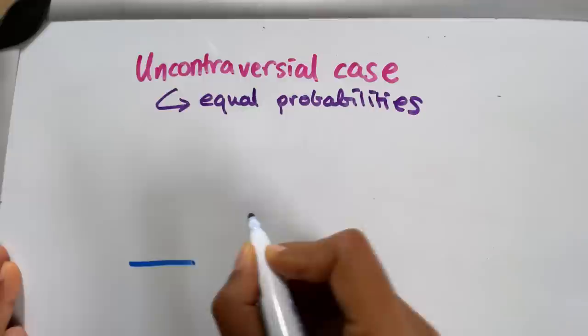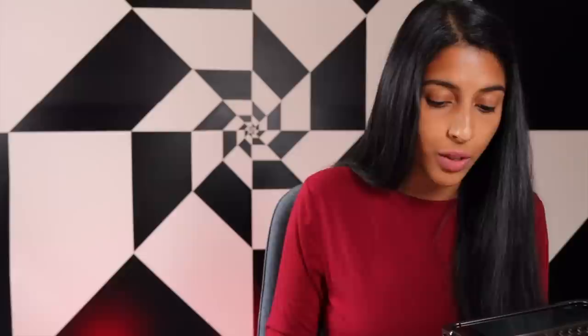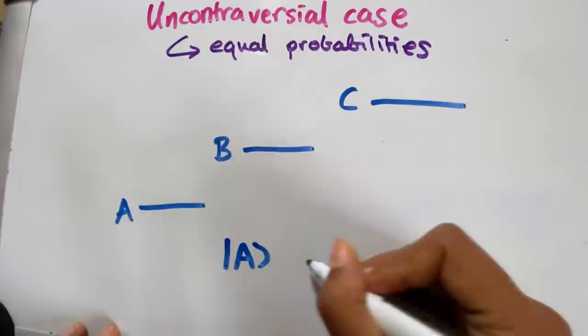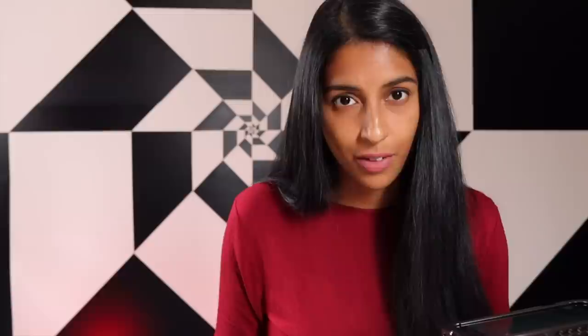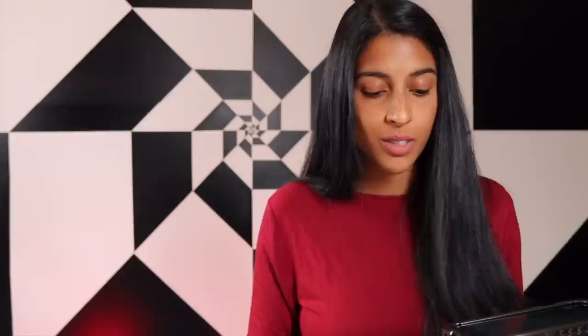Suppose I have an electron that can be in three different energy states. So it could be an energy state A, which is the lowest, or B, or C. Now in quantum mechanics, when you have a situation like this, you're going to actually have the electron be in all three of them at the same time. So the way that we represent this is by having the state have an A component, and a B component, and a C component. In this case, we're going to consider the example where these three numbers are going to be exactly the same.